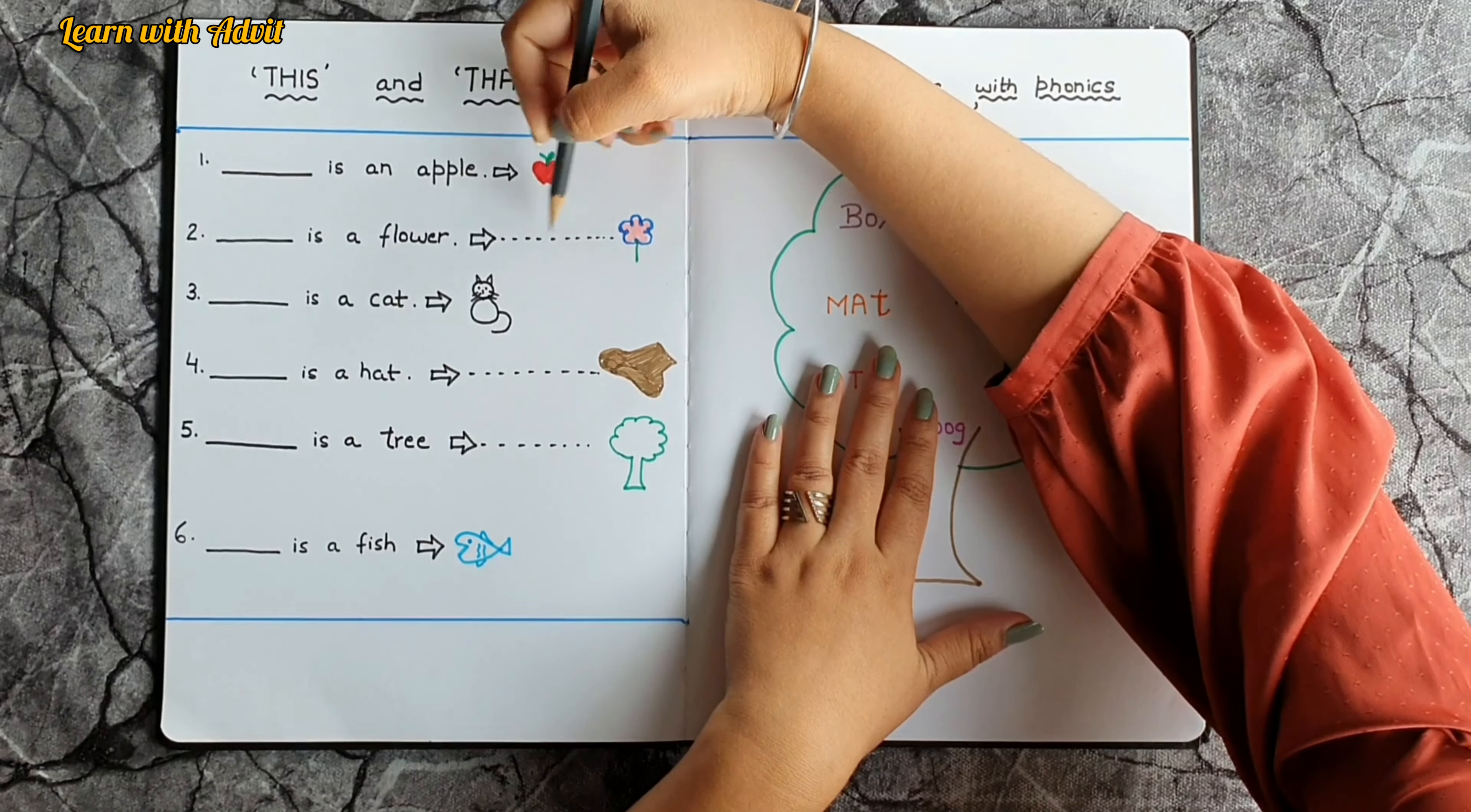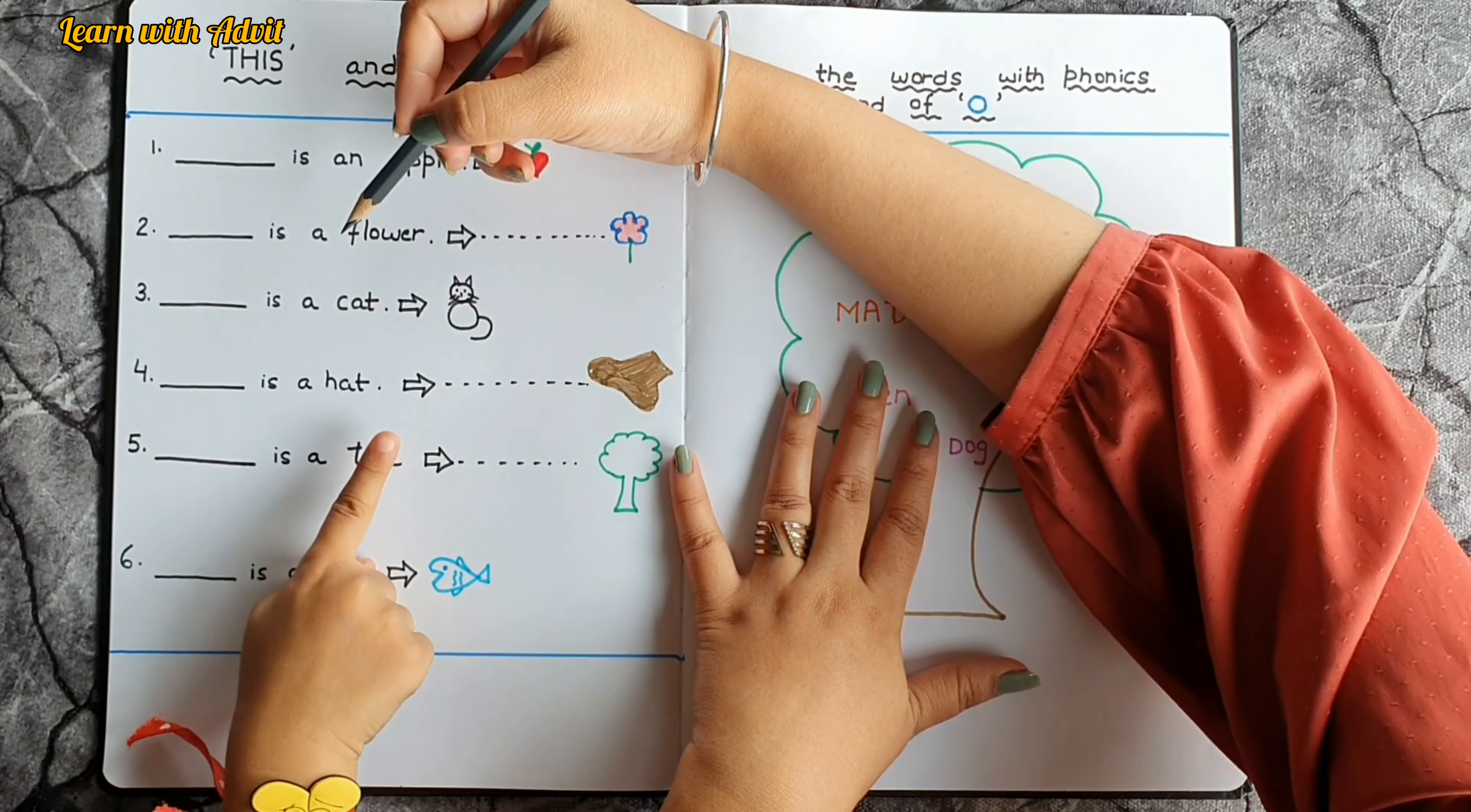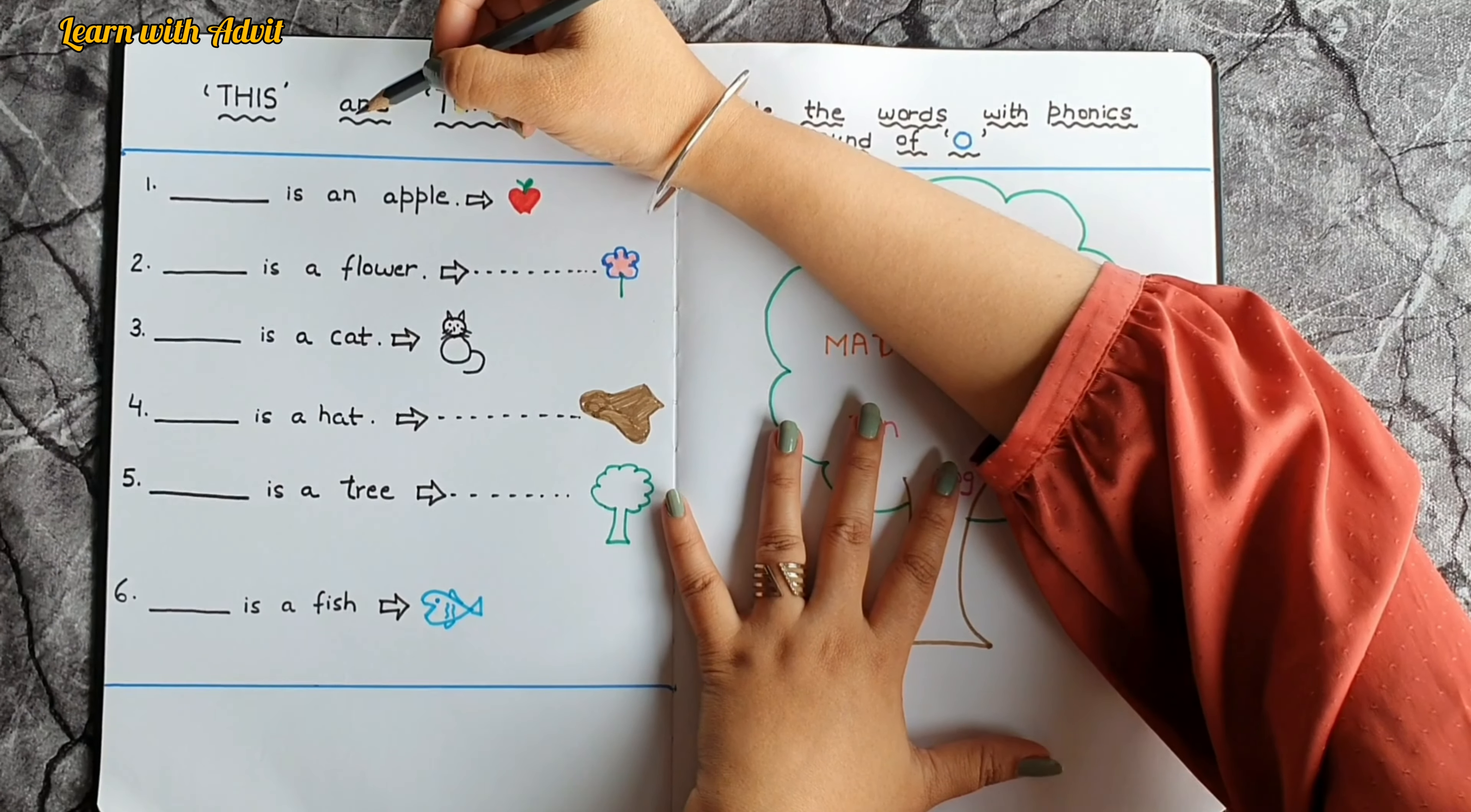Is a cat? This is a cat, very good. Is a hat? That is a hat. Why? Because the hat is far away from the arrow, yes. Is a tree? That is a tree, yeah, because tree is far away from the arrow. Is a fish? This is a fish, very good.